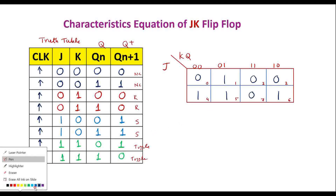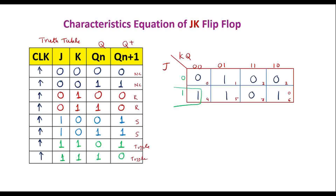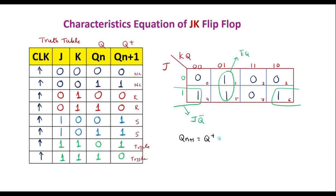Simplifying the K-map: cells 4 and 6 form a pair — the row value gives J, and the column value gives Q̄, so the term is JQ̄. Cells 1 and 5 form a pair — the column term gives K̄Q. Therefore, the characteristic equation of the JK flip-flop is: Qn+1 = Q+ = JQ̄ + K̄Q.